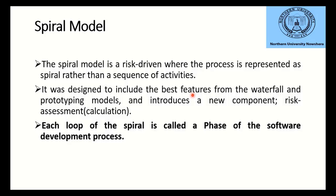From the prototyping model, after each cycle you get a prototype — an earlier version of the software. The spiral model also introduces a new component: risk assessment. Risk assessment means identifying risks at each phase. For example, if the customer wants the software completed within one month, that time constraint is a risk you must address.